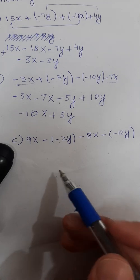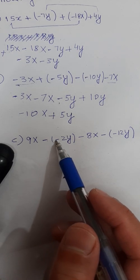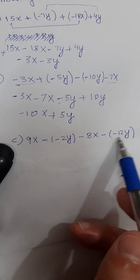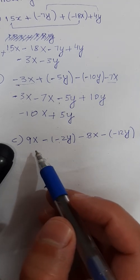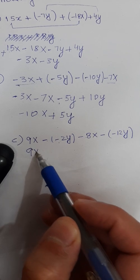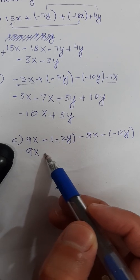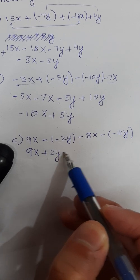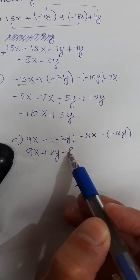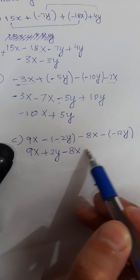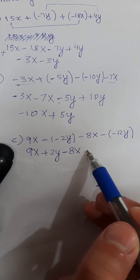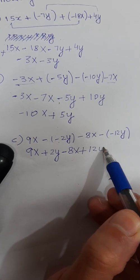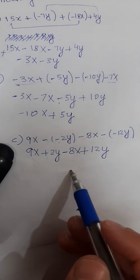Part c is 9x minus minus 2y minus 8x minus minus 12y. Open the brackets: minus into minus gives plus 2y, so it becomes 9x plus 2y minus 8x plus 12y. Now combine the like terms.